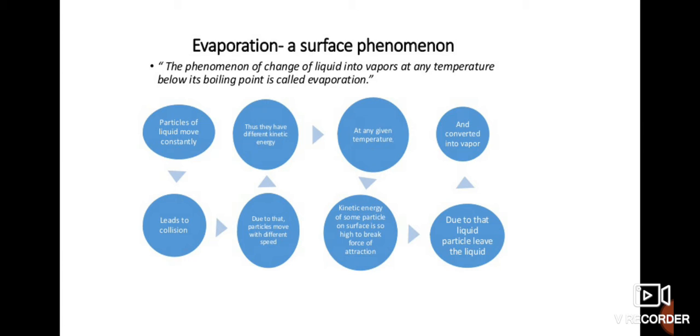What exactly happens during evaporation? The particles of liquid move constantly because of higher intermolecular space compared to solids. This leads to collision, meaning they strike against each other. Due to collision, particles move with different speeds and thus have different kinetic energy.